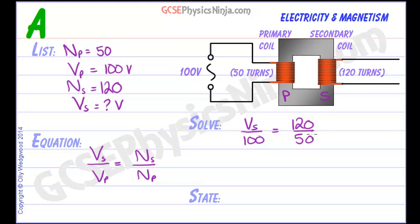I can simplify the right-hand side by dividing the top and bottom of this fraction by 10. Then multiply both sides by 100 to get rid of the 100 which is dividing on the left, so VS equals 12 over 5 times 100.